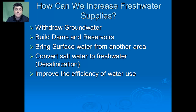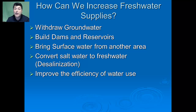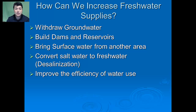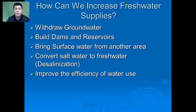One potential option would be to withdraw more groundwater. We could build additional dams and create new reservoirs, or transfer water from water-rich areas to water-poor areas. We might desalinate — converting that 70% salt water into fresh water — or perhaps use our water more efficiently. We're going to discuss each one of these and look at their pros and cons.